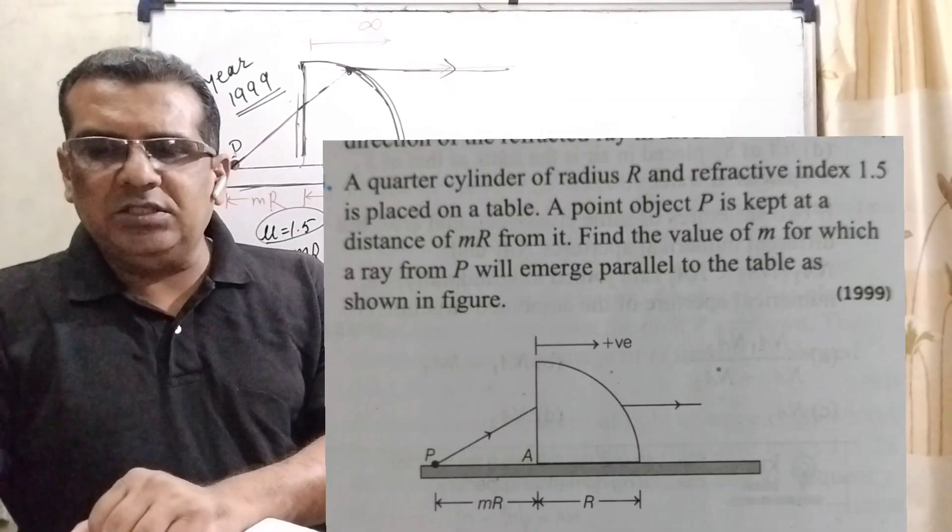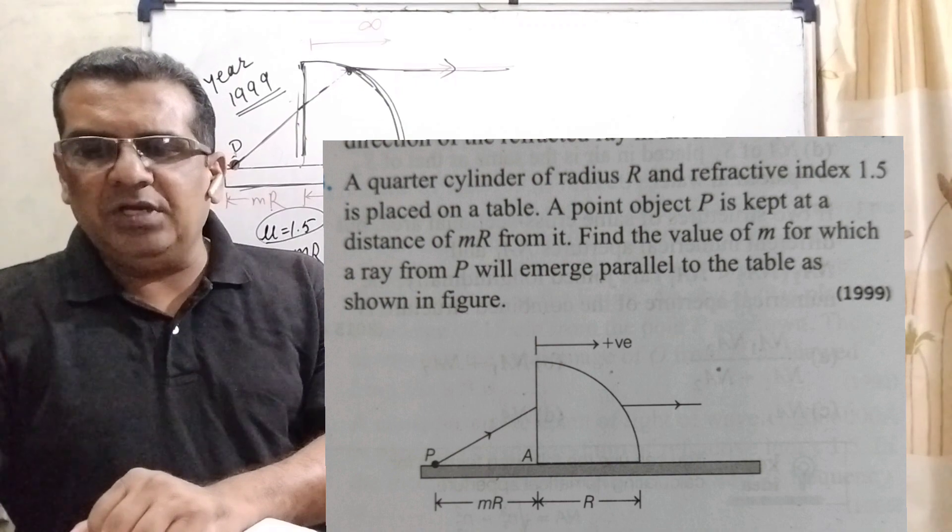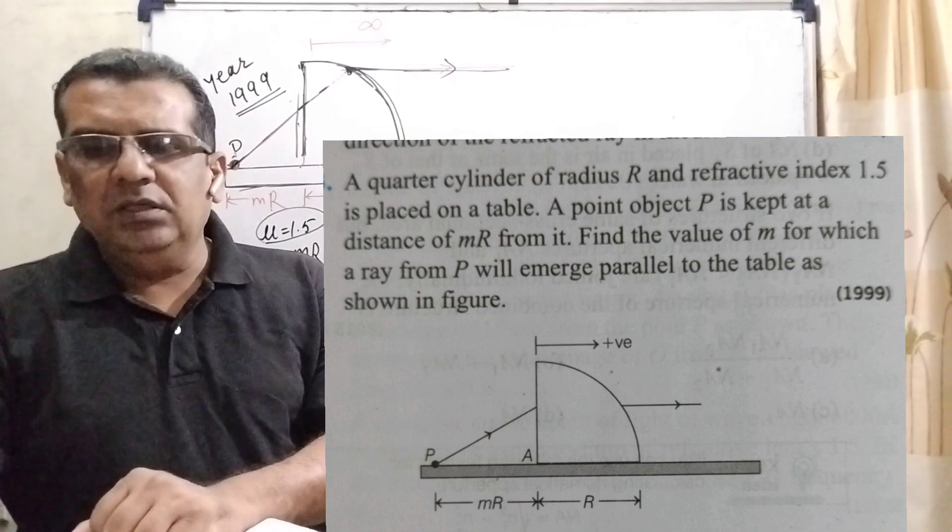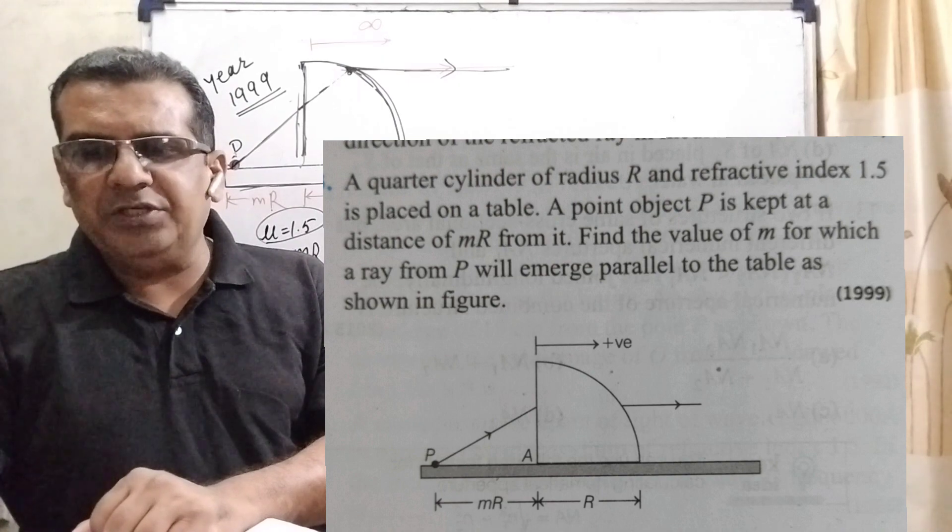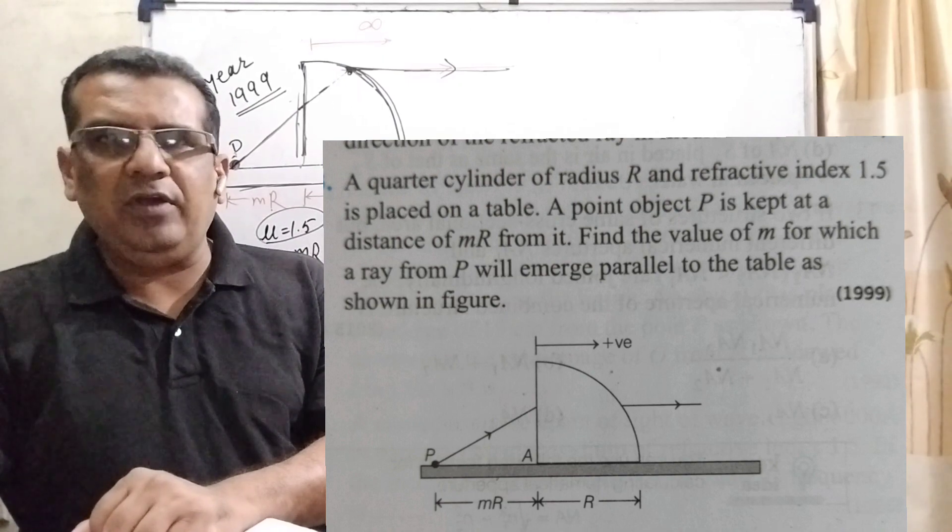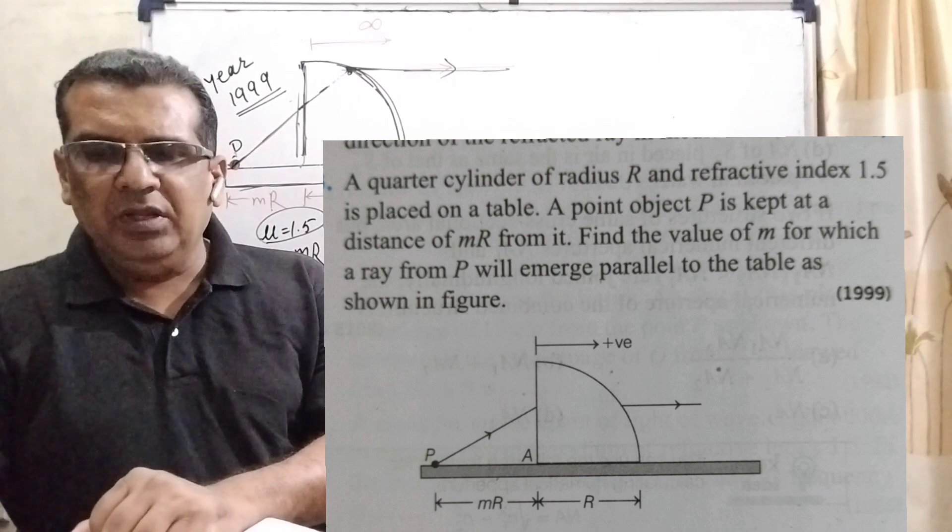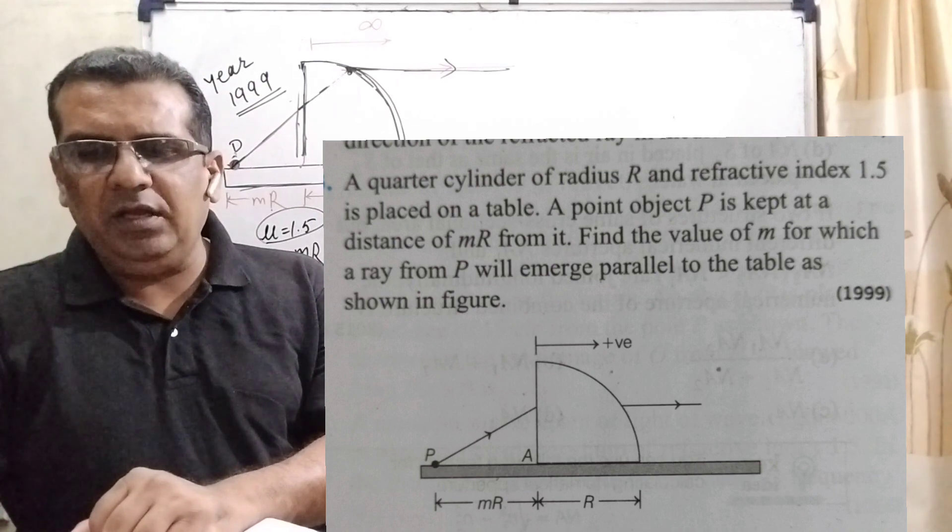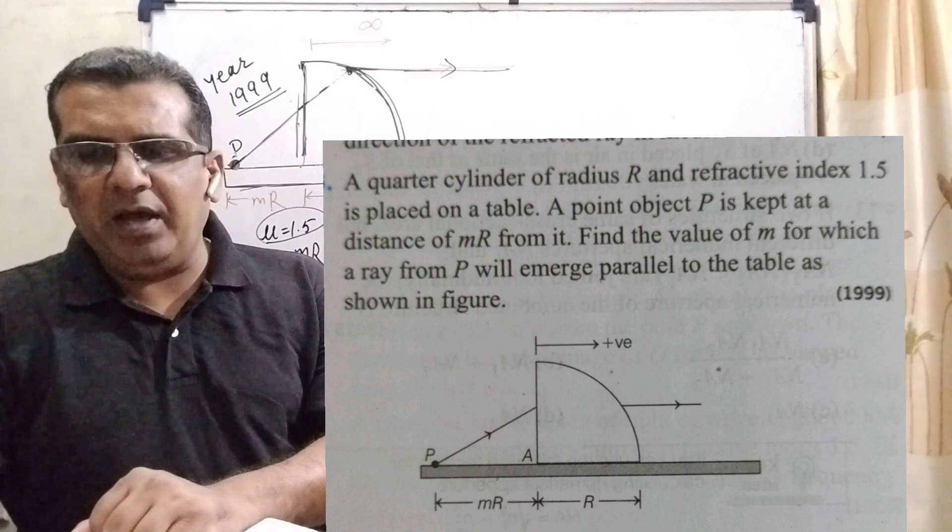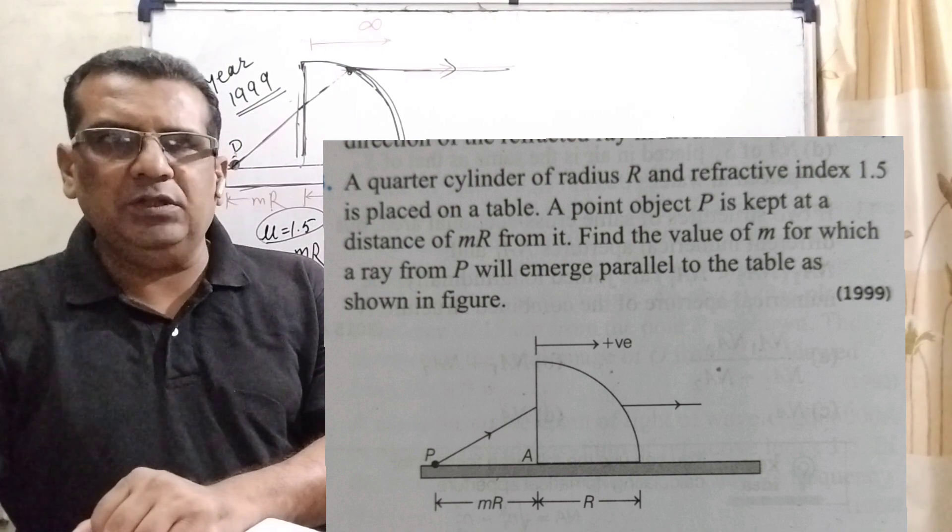Now here is the question. A quarter cylinder of radius capital R and refractive index 1.5 is placed on a table. A point object P is kept at a distance of mR, here m is small m, from it. Find the value of small m for which a ray from P will emerge parallel to the table as shown in the figure.